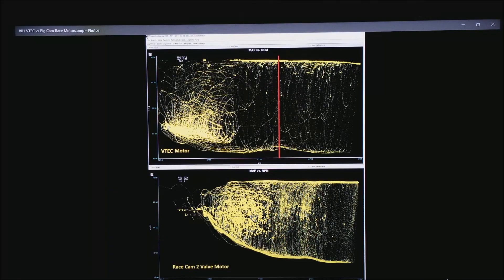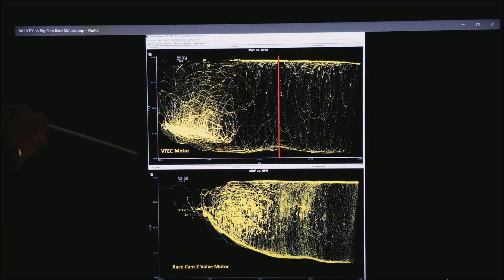So here is two of the motors we've been working with shown at the same scale from 15 kPa up to 100. Both of these motors are naturally aspirated. The one on the top is the VTEC motor. On the bottom is the race motor. This is a 1980s technology motor with a big cam.